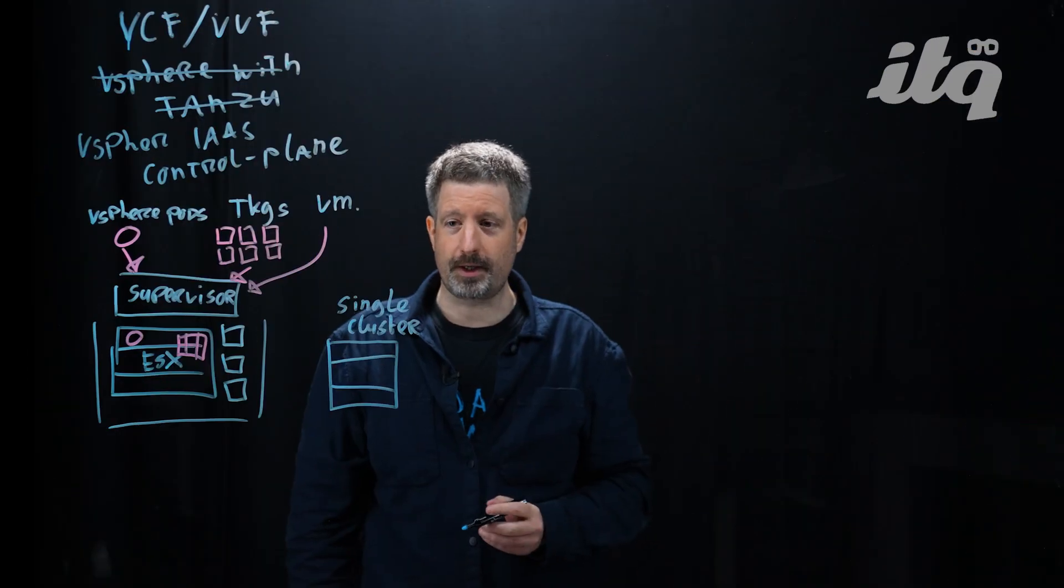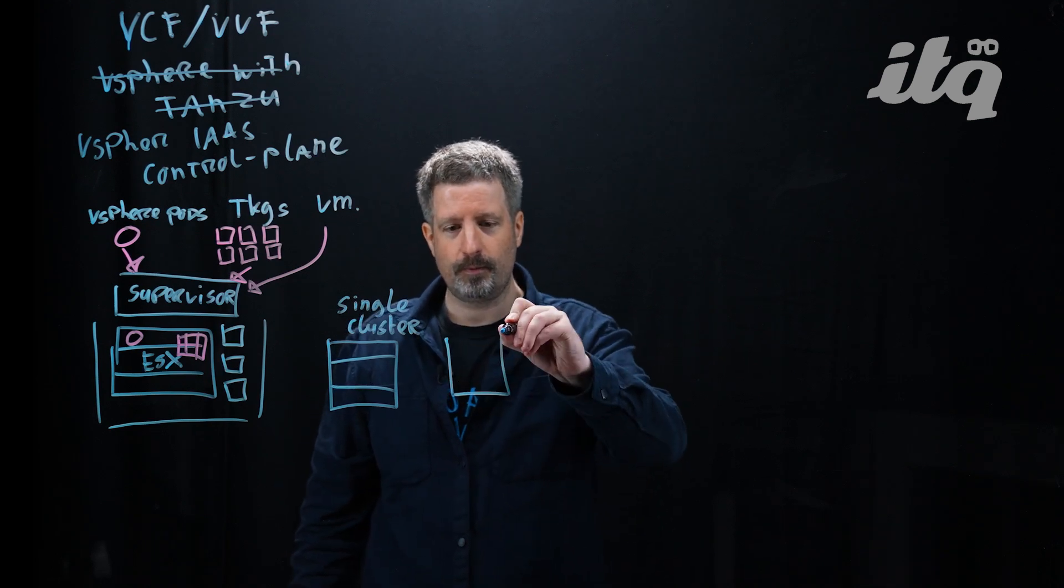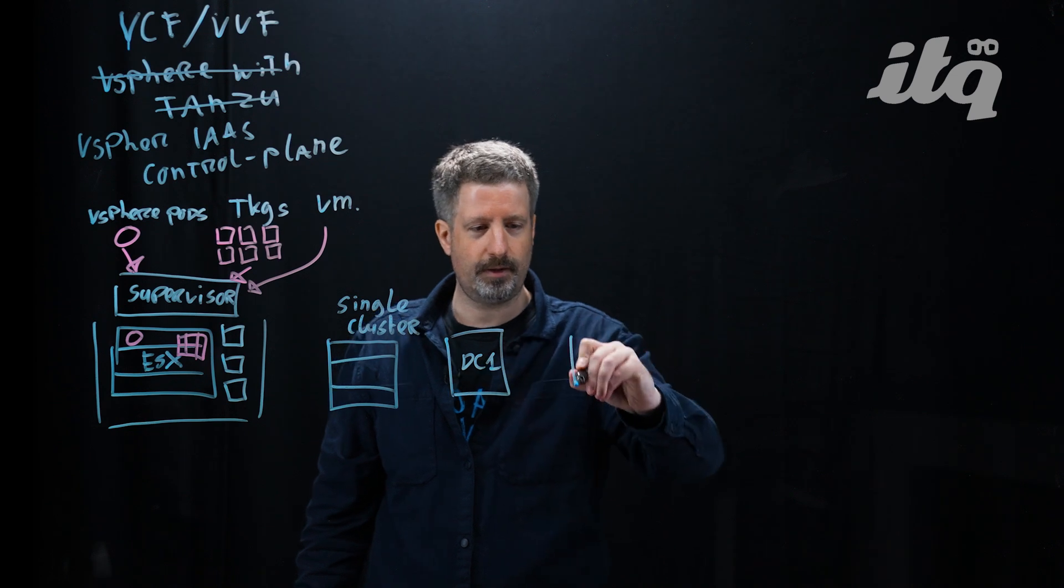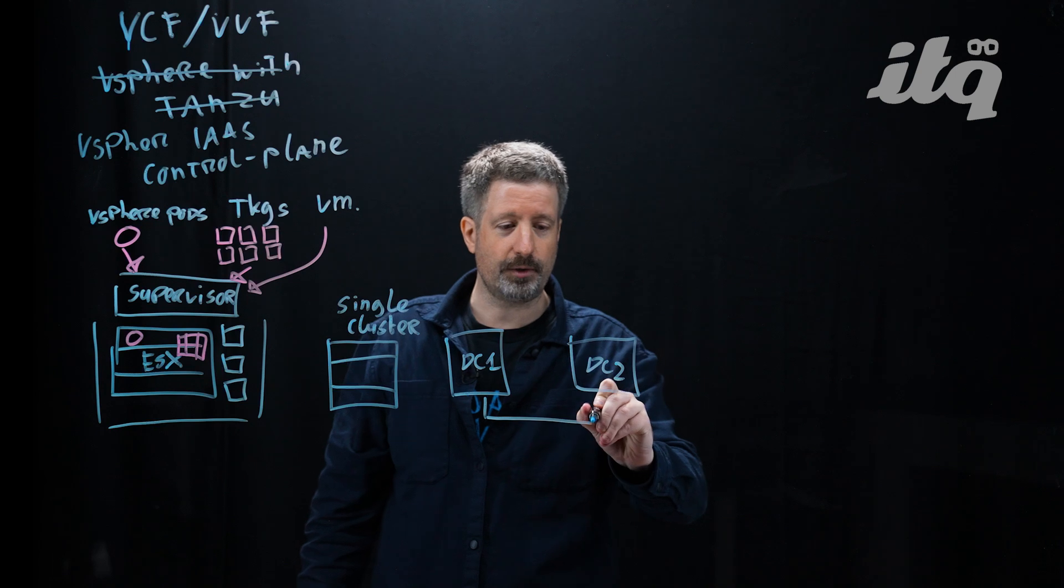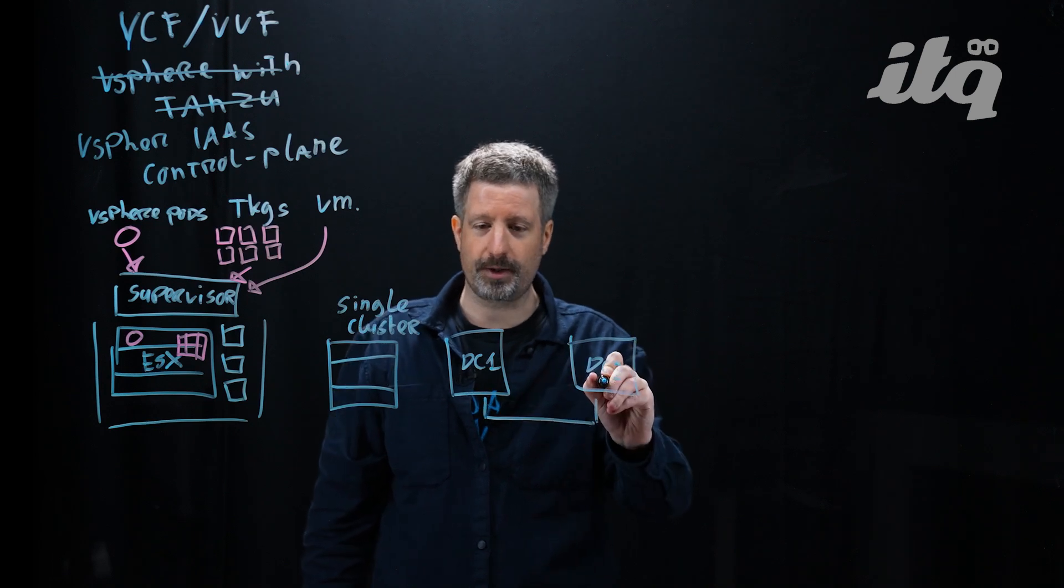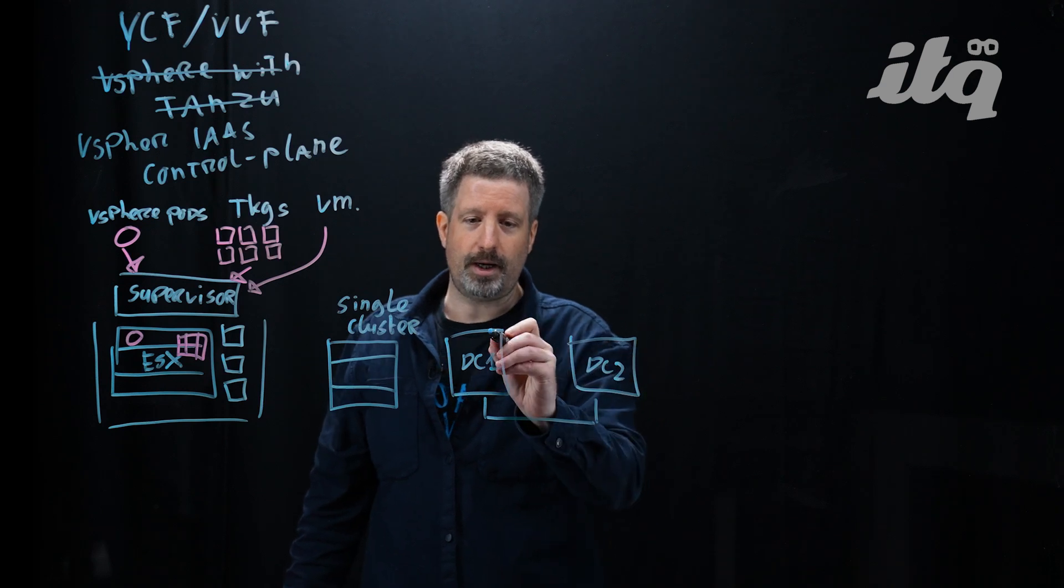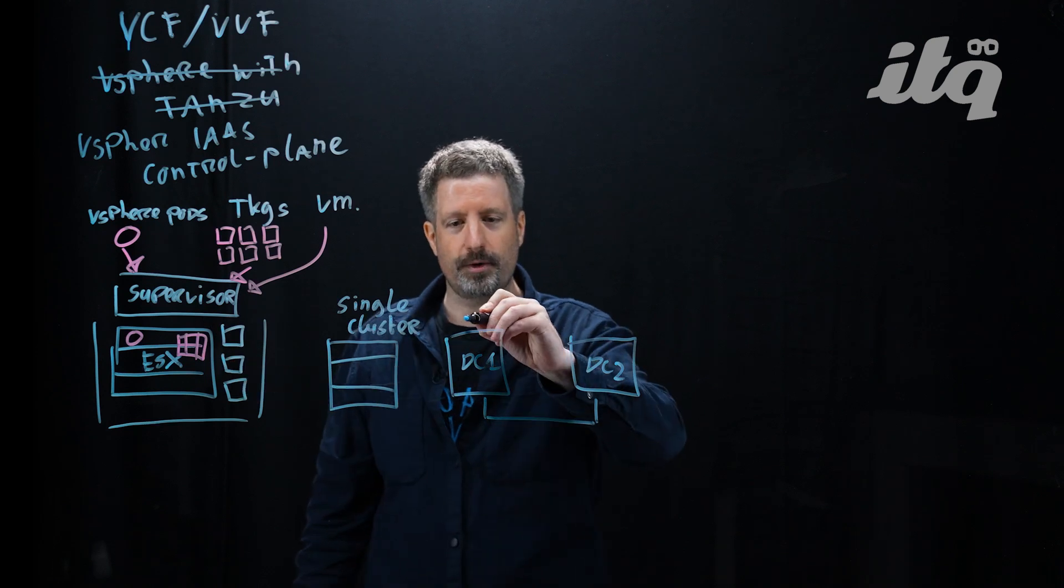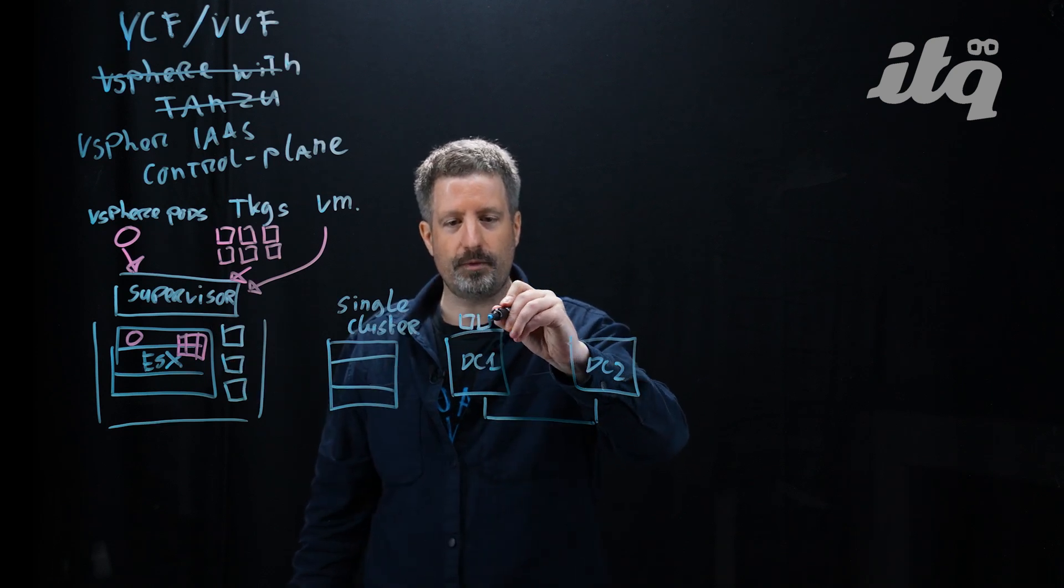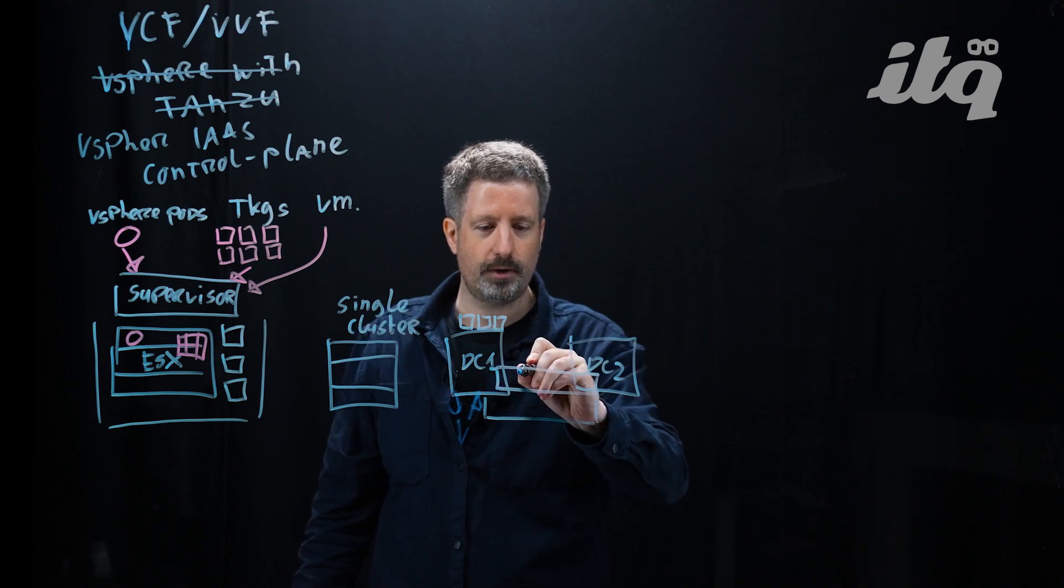If you have two data centers, then from vSphere 8 U3 onwards, the ES control plane is also supported on a vSphere stretch cluster, where you have DC1 and we have DC2. You will still need to provide your own storage replication between the sites. This is most commonly solved with using vSAN, of course. And in this mode, the ES control plane, the supervisor control components, they exist in one of the two data centers, but you can spread workloads amongst the two data centers.